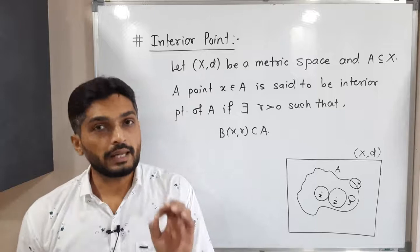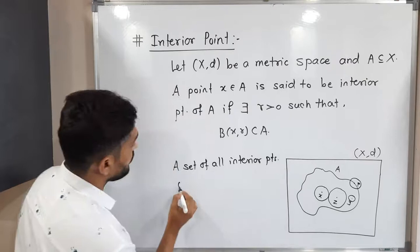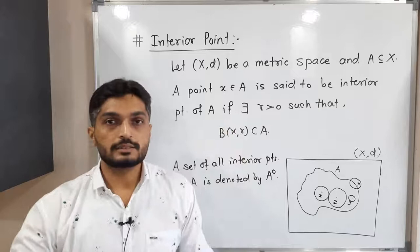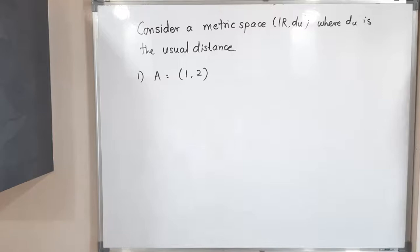The set of all interior points of A is denoted by A interior. The set of all interior points of A is denoted by A raised to 0 — we write 0 there. So the set of all interior points of A is denoted in this way. Let us discuss a few examples so you can easily understand this concept. Make a screenshot of it, then we will go further.